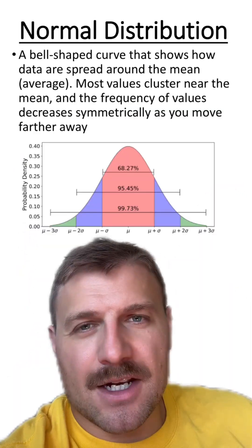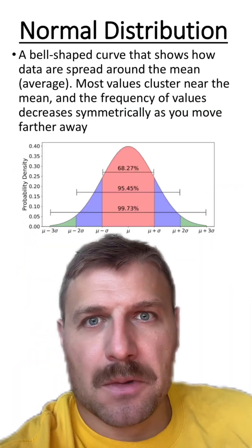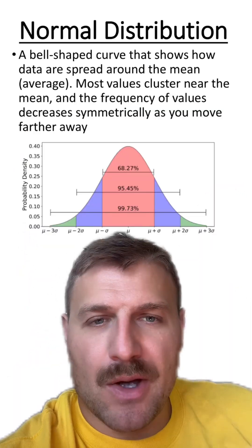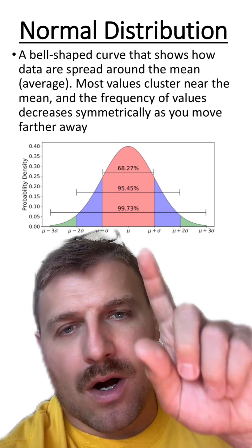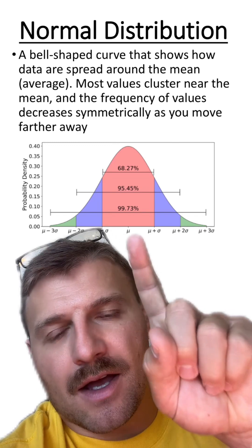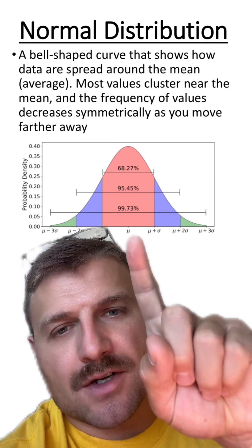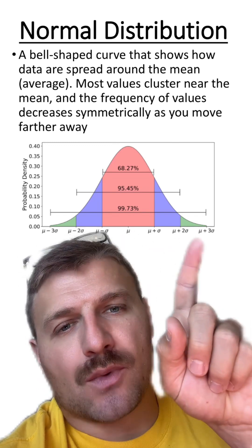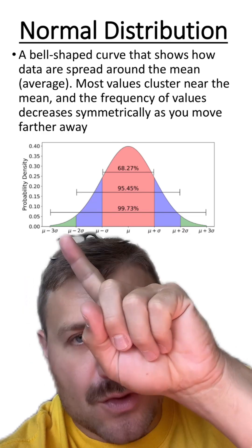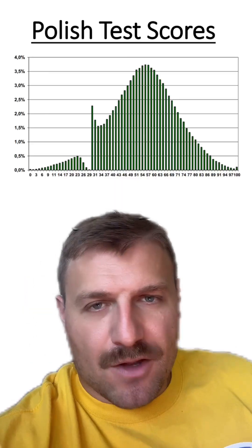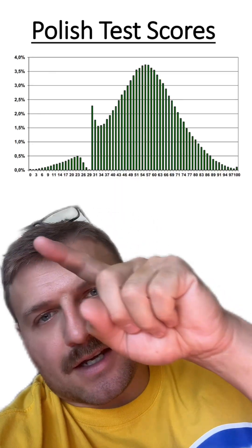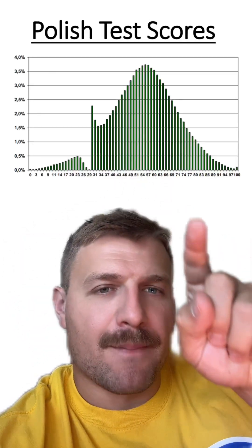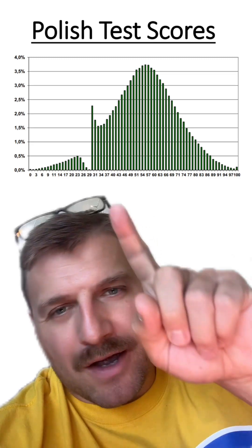The test data should follow this normal distribution or bell curve, where a large amount of the scores are near the average, while towards the extremes there are few scores. And for the most part, it does look like this — you can see the bell curve going up and down.